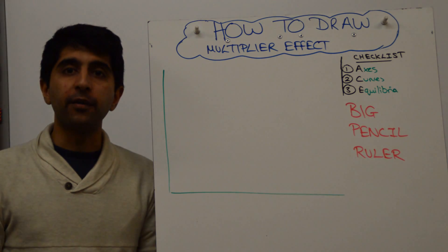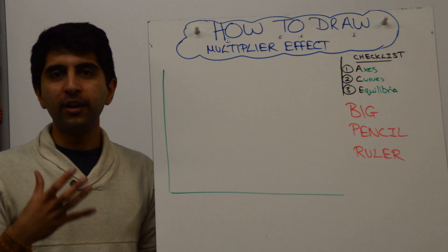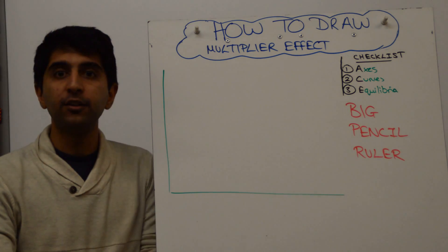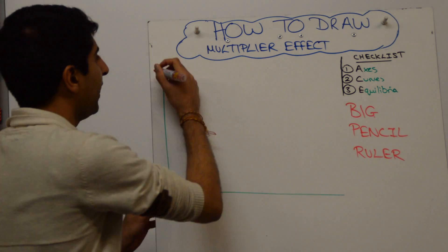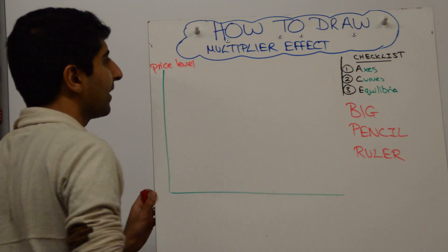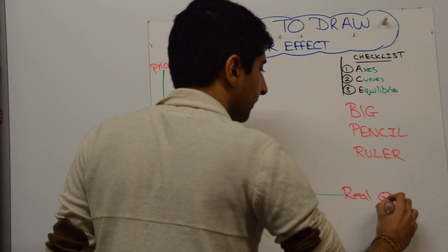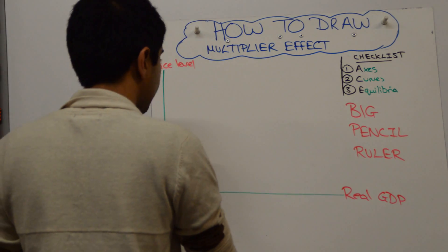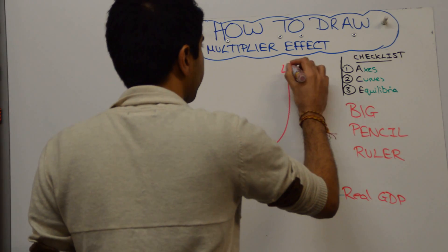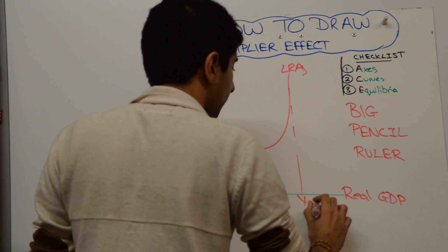this is a Keynesian theory, also known as the Keynesian multiplier. So it makes sense to draw the Keynesian LRAS curve here to show this. We need to therefore draw and label price level on the y-axis and real GDP on the x-axis. Next, draw your Keynesian LRAS like that and label your full employment level of output as such.